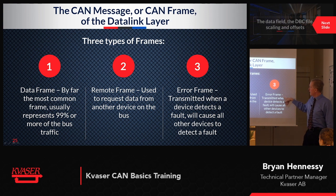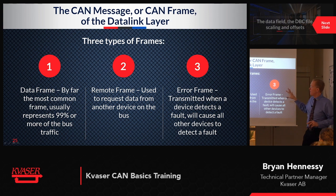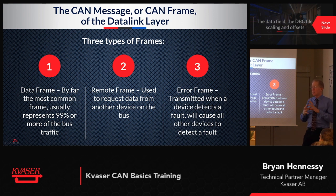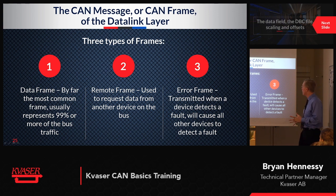On error frames, that's a more advanced subject I'm not going to get into, but CAN has a very elaborate and detailed error control method — evolving state machines that track how many errors have occurred on the frame, and can actually isolate and turn off a device that has been putting too many errors on the network.